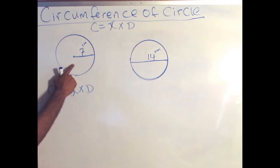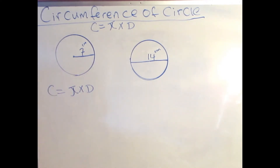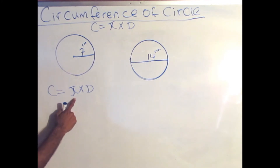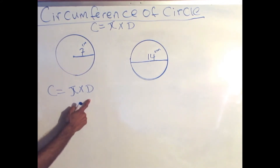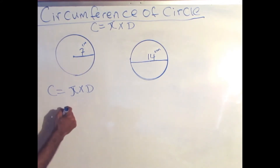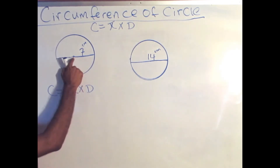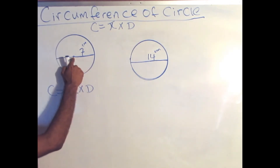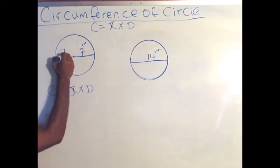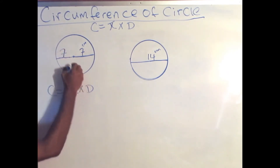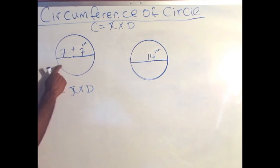In this circle, they gave us the radius, not the diameter. So in order for us to solve this circle, because this quarter of the circle is 7, the next quarter to complete the half will also be 7. So when I add 7 plus 7, I get 14.